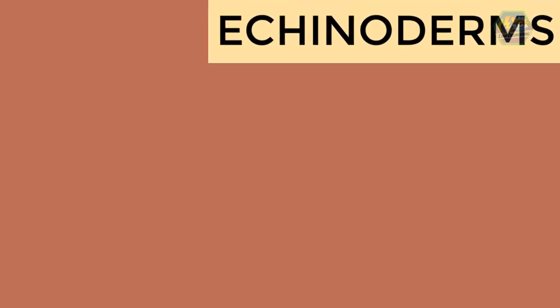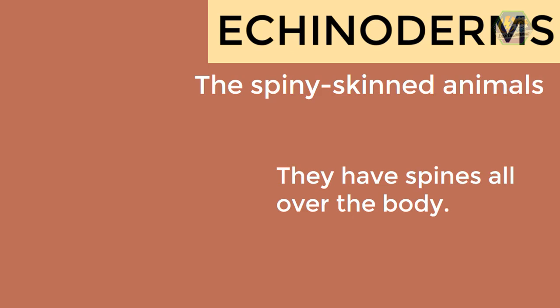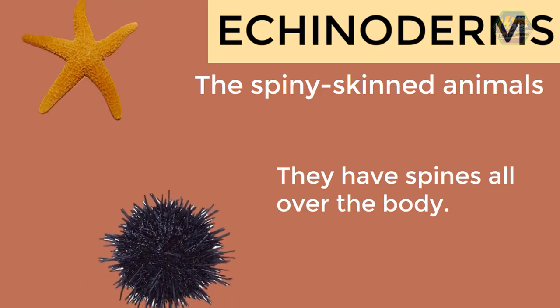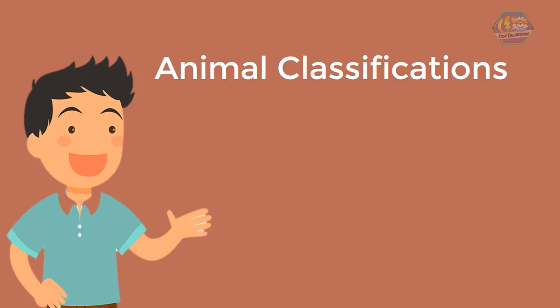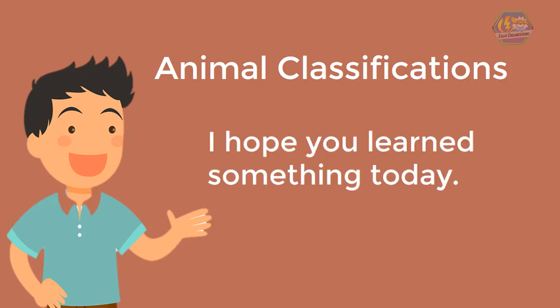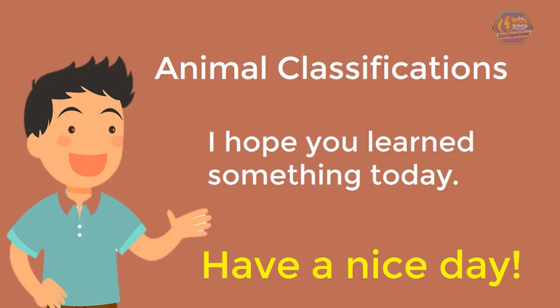Lastly, the echinoderms — the spiny-skinned animals. They have spines all over the body. Starfishes and sea urchins are echinoderms. They may live underwater but they sting too, so beware. So learners, those are the animal classifications. We'll talk about them more in the next topic, so stay tuned. This is all for now — I hope you learned something today. This is Easy Engineering.